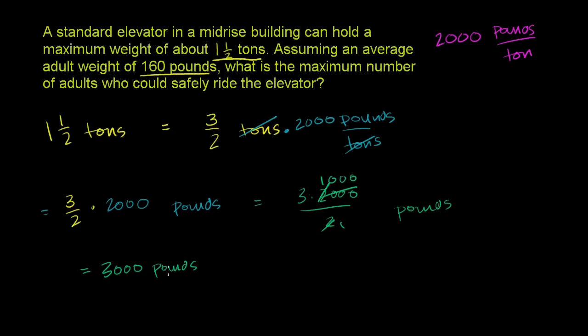So what we've done so far is we've just figured out the maximum capacity of the elevator. It can hold 1 and a half tons, which is the exact same thing as 3,000 pounds. Now, what we need to figure out is 3,000 pounds is equivalent to how many average adults of 160 pounds? Or how many 160 pound people would it take to weigh a total of 3,000 pounds? Well, we can just divide by 160. And if you want to make sure that the units work out, we want our answer to be in terms of people, and we want the pounds to cancel out.